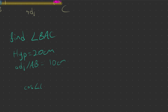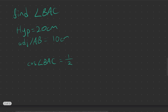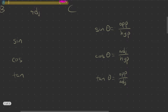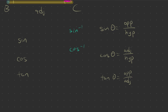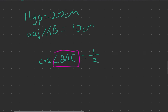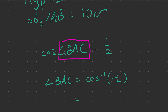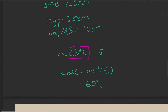So how do I find the angle? In order to find the angle, you have to use the inverse of these trigonometric ratios. The inverses are sine inverse, cosine inverse, and tangent inverse, and the numbers beside them are just the ratios. So angle BAC equals to cosine inverse of a half. If we work that out, we get 60 degrees. So angle BAC equals to 60 degrees.